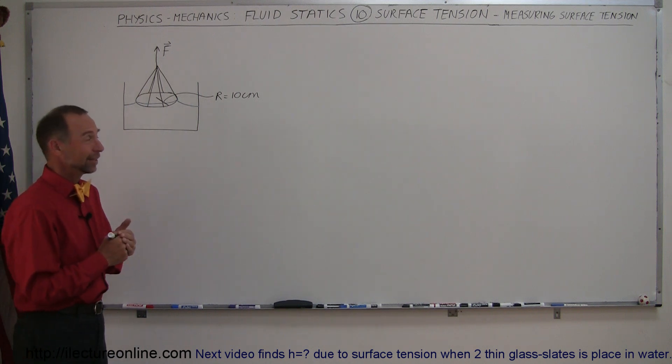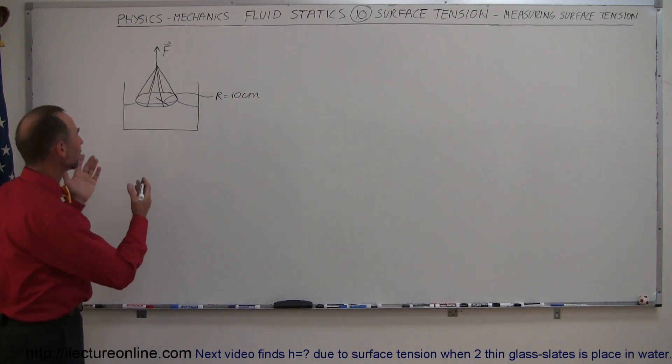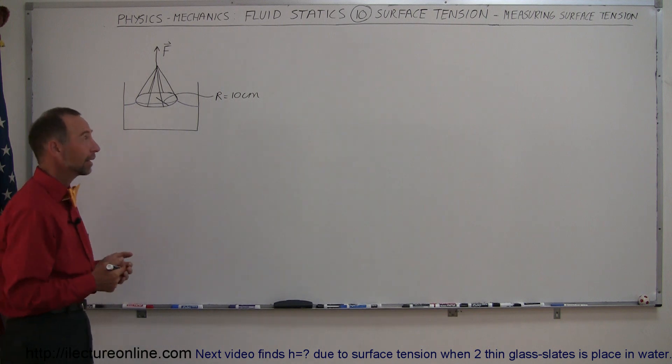If you're like me, you start wondering about a lot of things. How in the world do they figure out what the surface tension is of a particular liquid, like water or mercury?